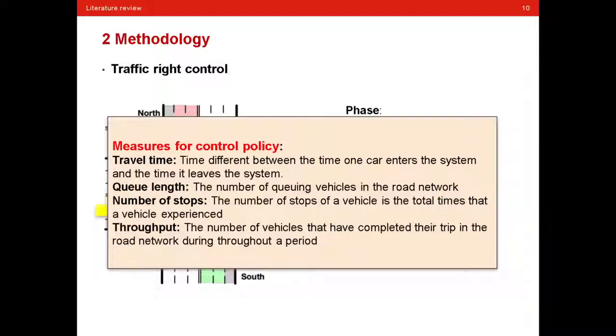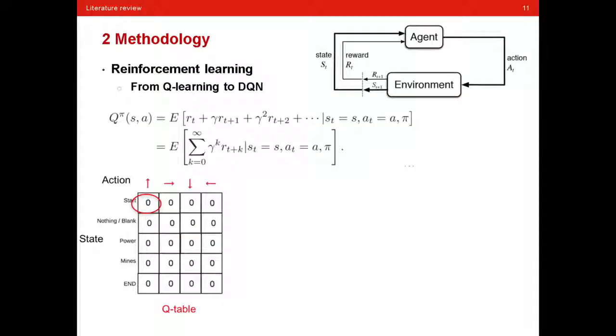And we have throughput. The throughput is the number of vehicles that have completed their trip in the road network during a period.